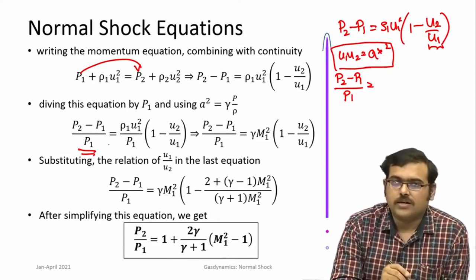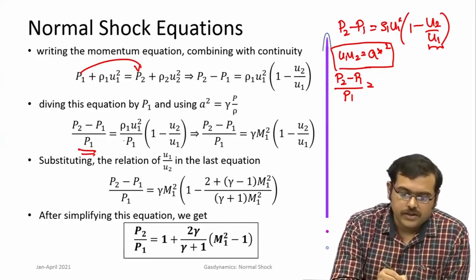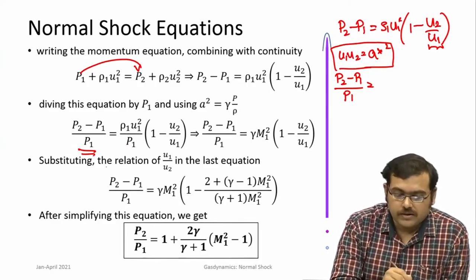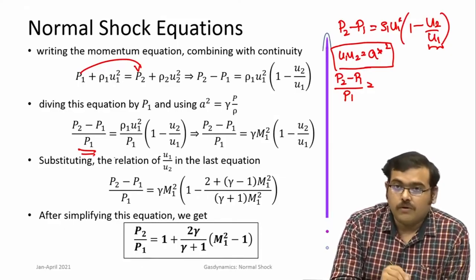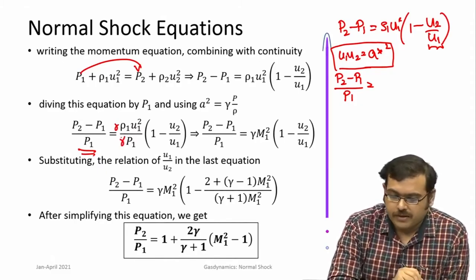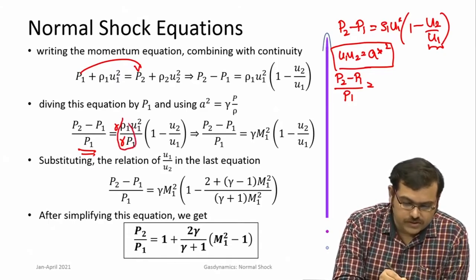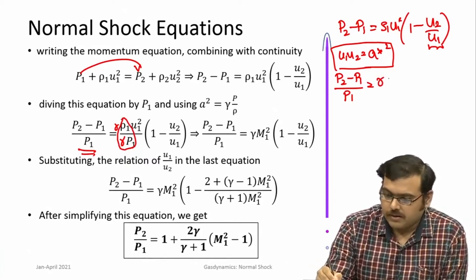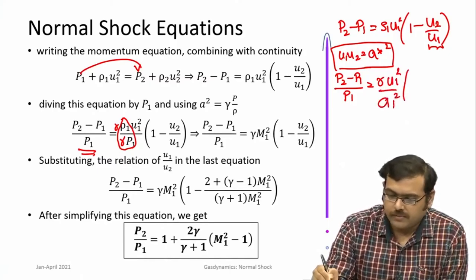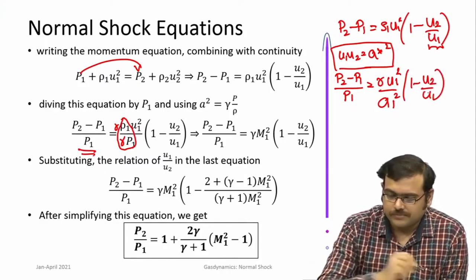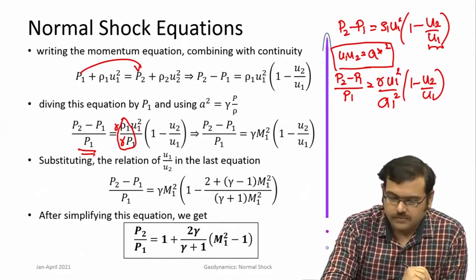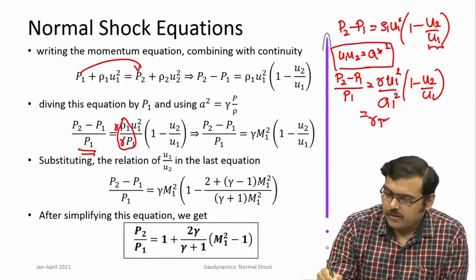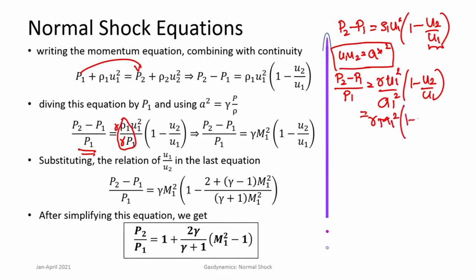You can divide this by P1, and you get (ρ1·u1²/P1) multiplied by (1 - u2/u1). Now, a combination that comes up again and again in gas dynamics is P/ρ, which can be converted to the speed of sound for a perfect gas by multiplying and dividing by gamma. If you do that, you get the term gamma·P/ρ, which comes out to be gamma·u1²/a1² multiplied by (1 - u2/u1) — which is gamma·m1²·(1 - u2/u1).